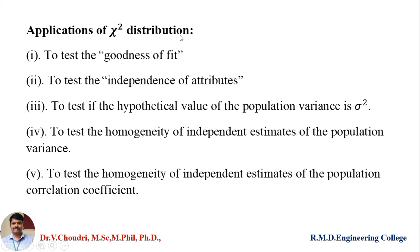What are the applications of chi-square distribution? First, to test the goodness of fit — whether the observed data match with expected data, if both are significant or not. Next, to test the independence of attributes. If any two attributes are uncorrelated, that is called independence; if dependent, that is dependence of attributes. Third, to test if the hypothetical value of the population variance is sigma square. Fourth, to test the homogeneity of independent estimates of the population variance. Last, to test the homogeneity of independent estimates of the population correlation coefficient.